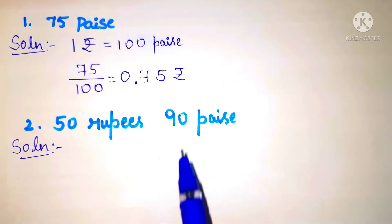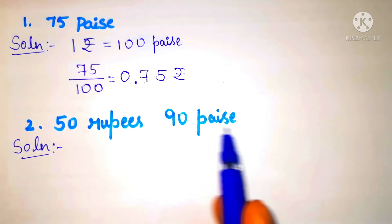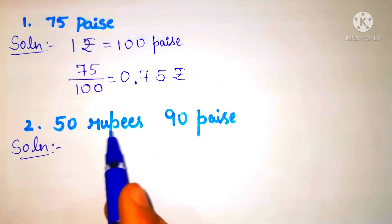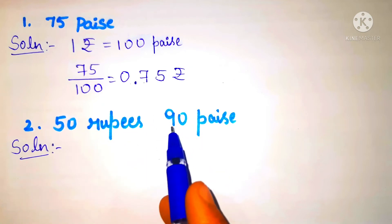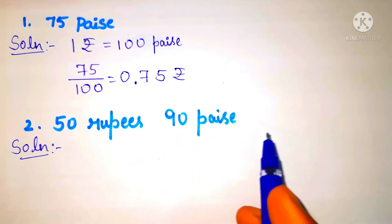Here we have to convert only paise into rupees. They have already given 50 rupees, so we will only convert 90 paise into rupees.